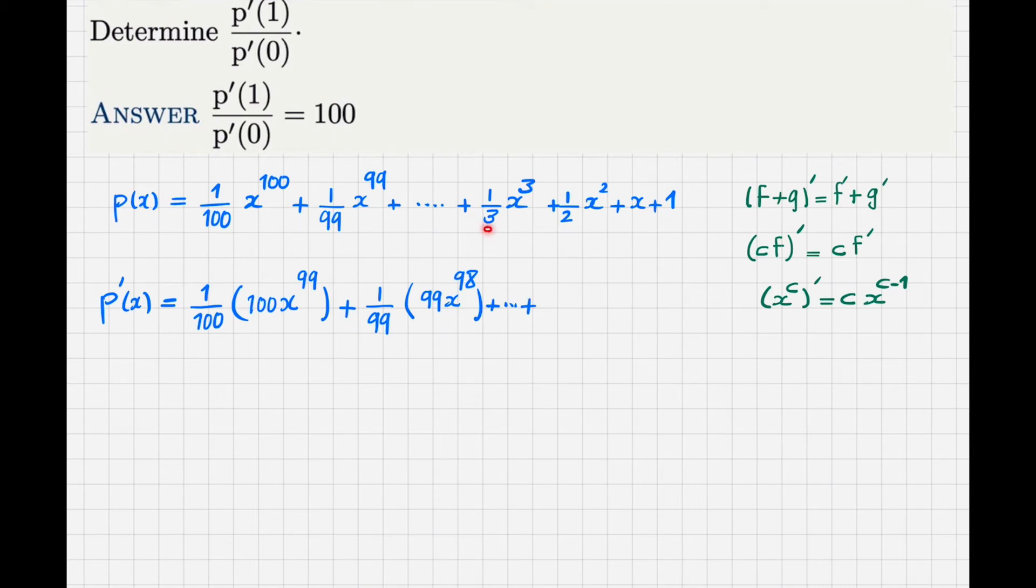When I reach here, I do the same thing. So I will have 1 over 3, 3 goes down, x to power 1 less is 2. Then I have 1 over 2, 2 goes down x to power 1, which we don't write. The derivative of x is 1 and the derivative of the constant number 1 is 0.